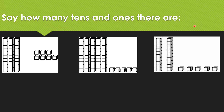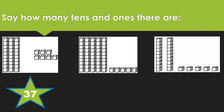Say how many tens and ones there are in each of the squares. Let's look at the first square. We see one, two, three groups of tens and one, two, three, four, five, six, seven ones. That number is 37. You see how quickly we counted those because we didn't have to count each and every cube.